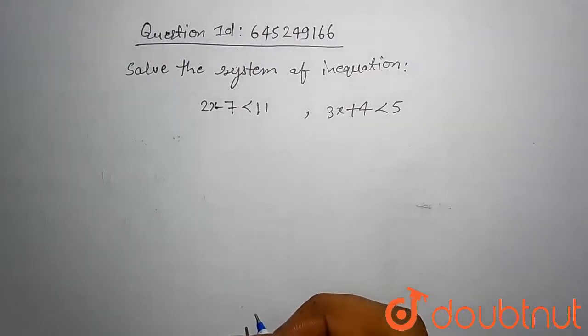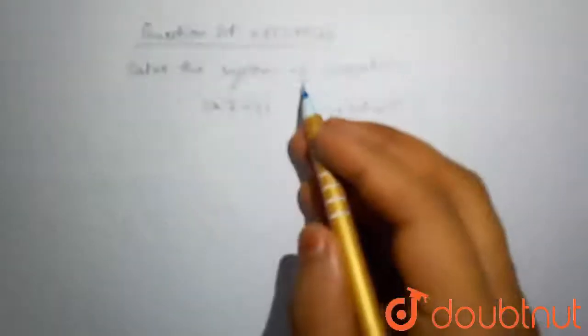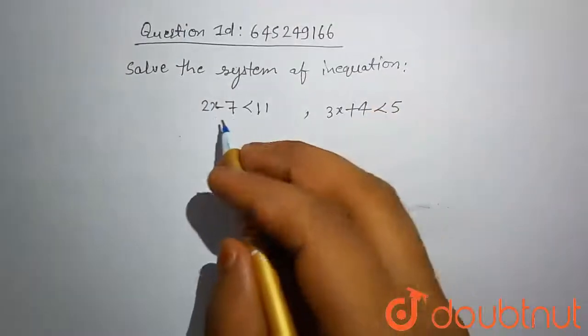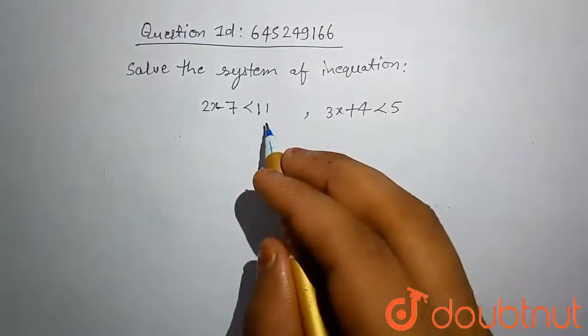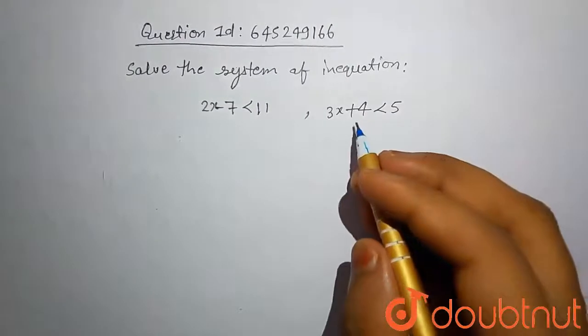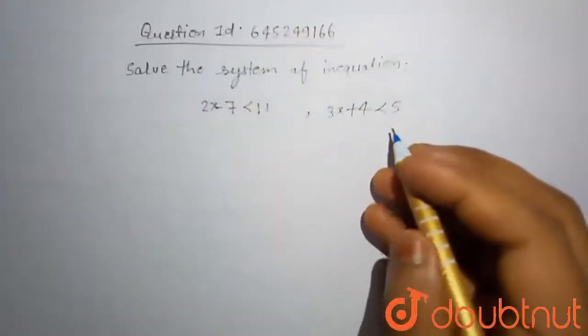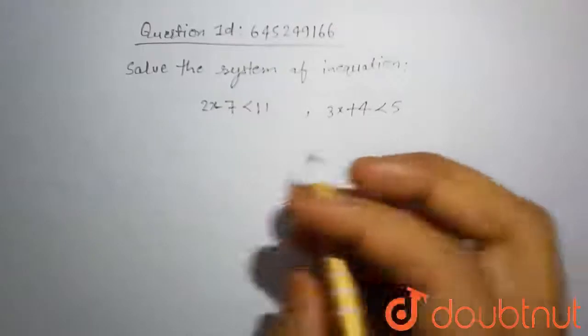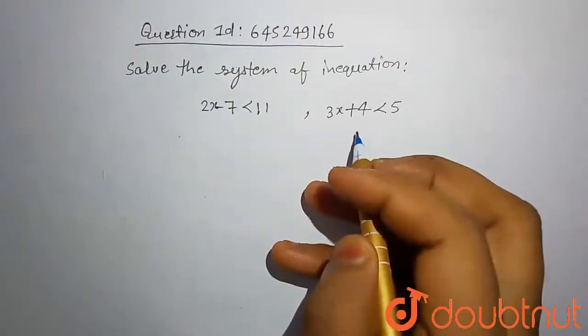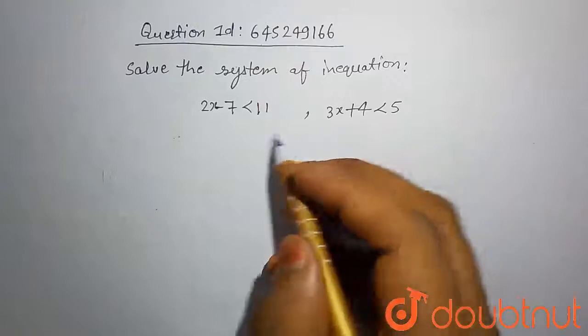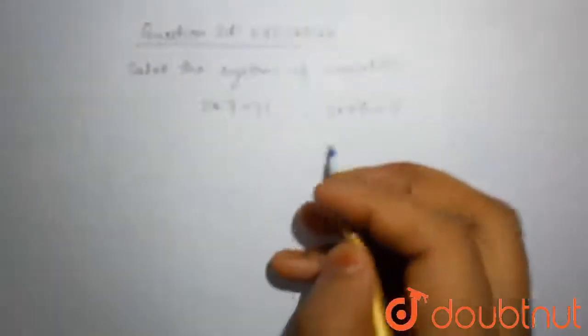Hello friends, today our problem is solve the system of inequations. First one is 2x-7 less than 11, and second one is 3x+4 less than 5. First, we solve these two equations separately, then our final answer is intersection of these two.